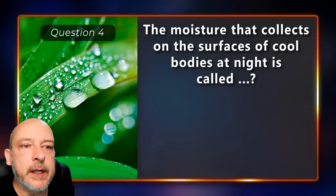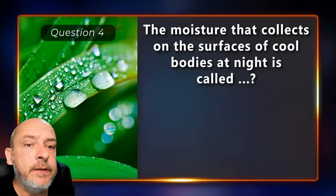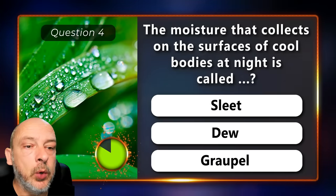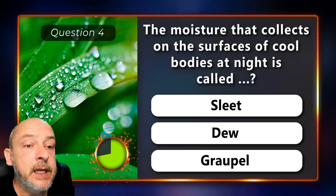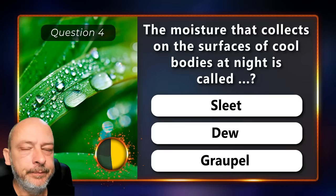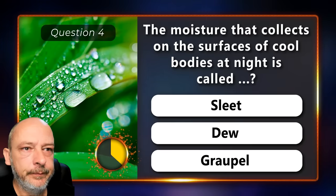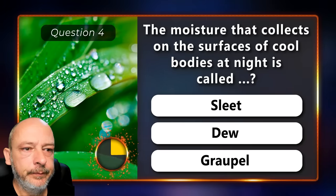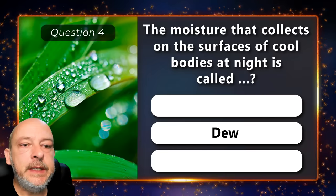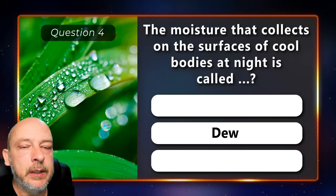The moisture that collects on the surfaces of cool bodies at night is called sleet, dew, or graupel? It is dew.